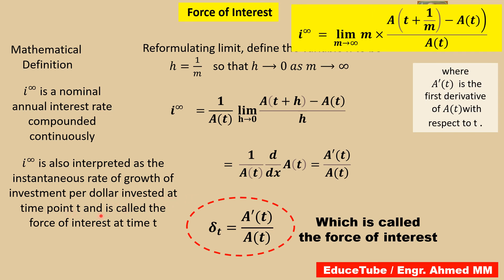And i^(∞) can be interpreted as the instantaneous rate of growth of investment per dollar invested at time point t, which is called the force of interest at time t. So easily in this position, we can write it is δₜ, because force of interest at time t is δₜ. That is why I wrote which is called the force of interest. So what we have found: force of interest equals A'(t)/A(t).